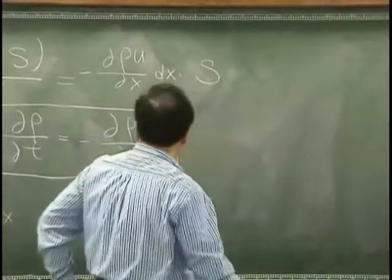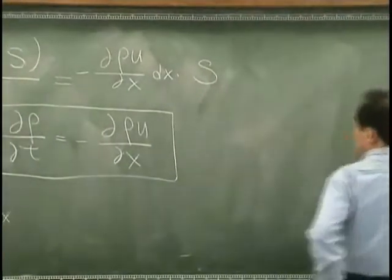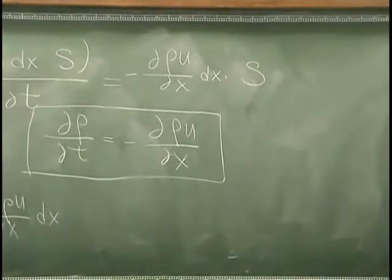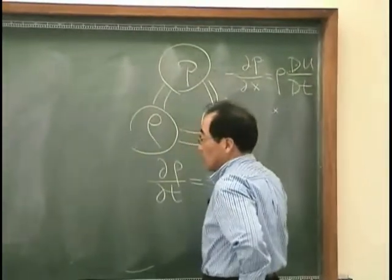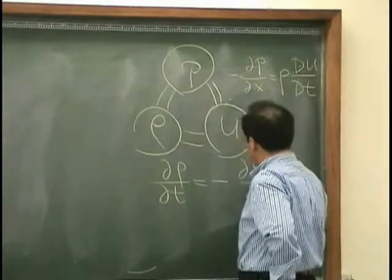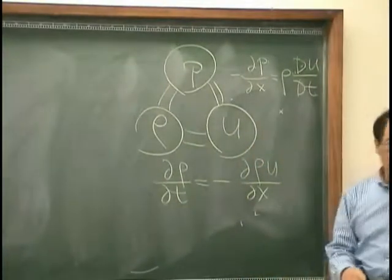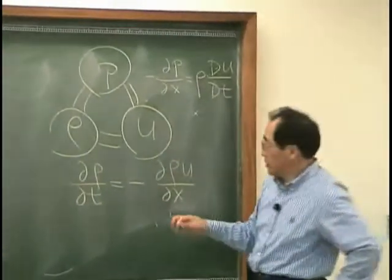We found that d rho dt is equal to minus d rho u dx. The physical interpretation of this is, rate of change of mass has to be balanced by mass flux.